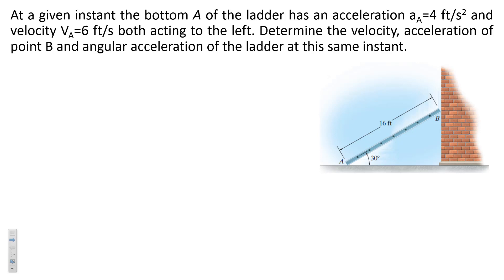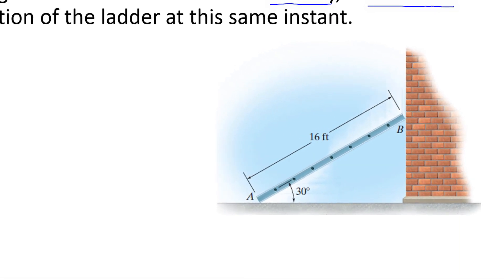In this problem we are interested to find the velocity and acceleration of point B, and also the angular acceleration of the ladder at this instant. Let me go ahead and draw the kinematic diagrams of this problem. We know the velocity and acceleration of point A — both of them are acting to the left, so VA is 6 feet per second and the acceleration of A is 4 feet per second squared.